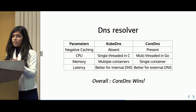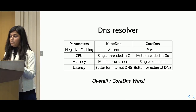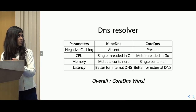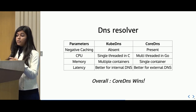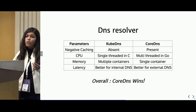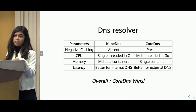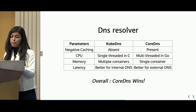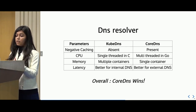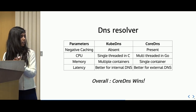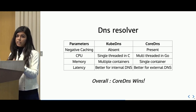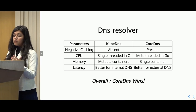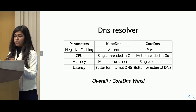In terms of CPU, kube-DNS uses dnsmasq, a highly optimized DNS resolver written in C, but it's single-threaded and would need a full core to work on, whereas CoreDNS is multi-threaded and can utilize CPU better. In terms of memory, kube-DNS consists of three containers whereas CoreDNS is a single container. kube-DNS also needs to keep a cache of all the endpoints it has resolved across all three containers, so there's a lot of memory overhead. In terms of latency, kube-DNS performs better for internal DNS and CoreDNS performs better for external DNS, but the difference is not that significant — that's why CoreDNS is the default DNS resolver in Kubernetes now.